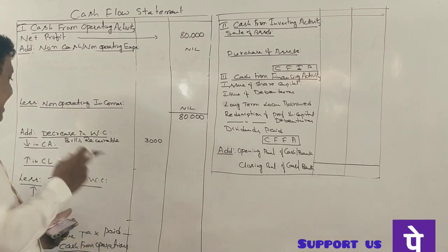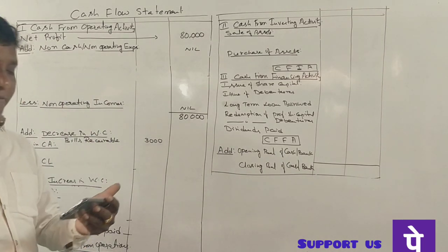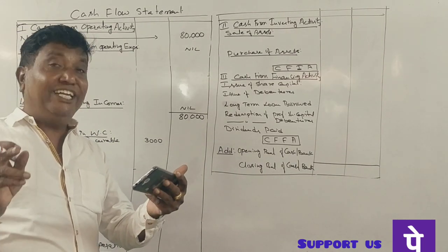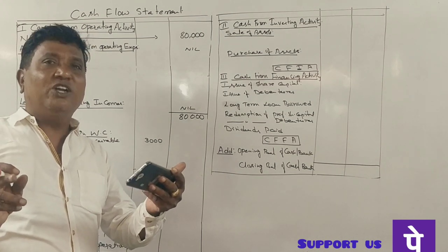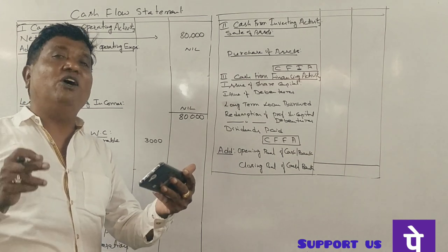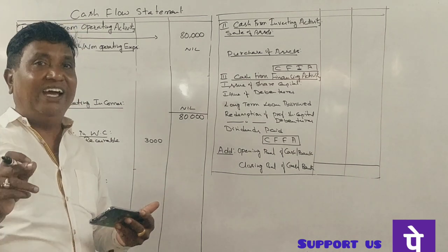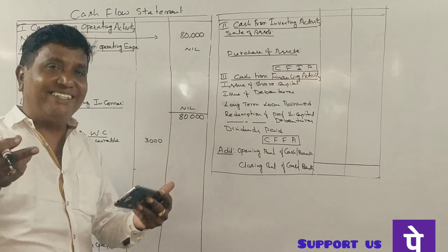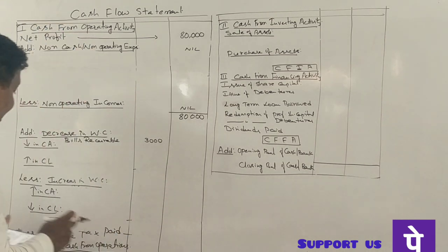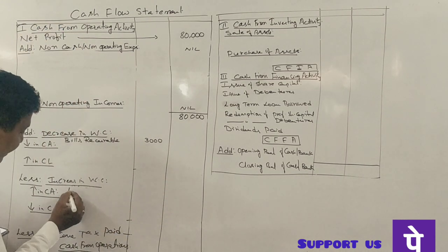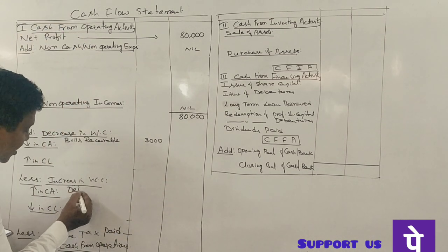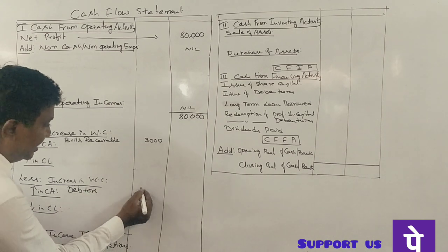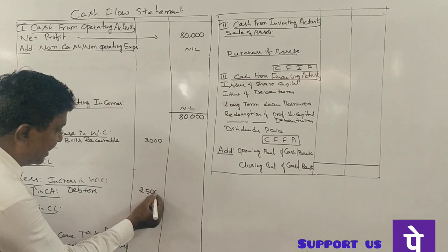Debtors: 20,000 in the previous year and 22,500 in the current year. Debtors are a current asset — there is an increase in current asset. An increase in current asset means working capital increases, which means we deduct it from cash from operating activities. Debtors increased by 2,500 rupees.